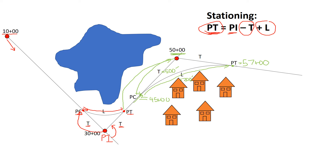We don't need the distances along those preliminary traverses anymore. If we kept that value, we'd have multiple stations with the same number — the PI is at station 50, but with a PC at 45 and a PT at 57, station 50 has to occur somewhere on the curve. We cannot use that stationing of 50 as a PI; it's not on our curve. The preliminary traverse does not get built — nothing gets built there. We only move along the lengths of curves; there's no roadway point at the PI.